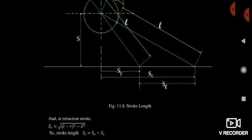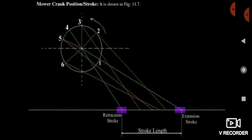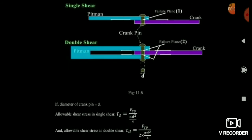The stroke length SL equals SE minus SR — that is, the distance covered in the extension stroke minus the distance covered in the retraction stroke. Regarding allowable shear stress from strength of materials: tau sigma equals Fcp divided by (pi/4 × d²) for single shear, and Fcp divided by (2 × pi/4 × d²) for double shear. Only the area is changing between single and double cases.